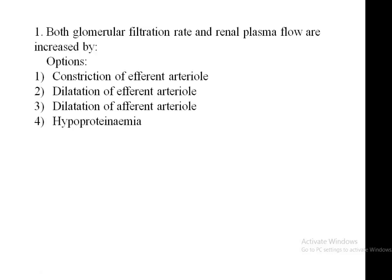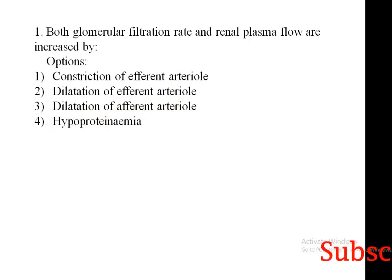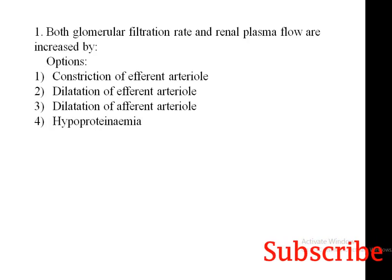The question asks about both glomerular filtration rate and renal plasma flow — both are increased by which option? The options are: constriction of efferent arteriole, dilatation of efferent arteriole, dilatation of afferent arteriole, or hypoproteinemia. To answer this question we must have an idea about the glomerular filtration rate, renal plasma flow, and how filtration takes place in Bowman's capsule.